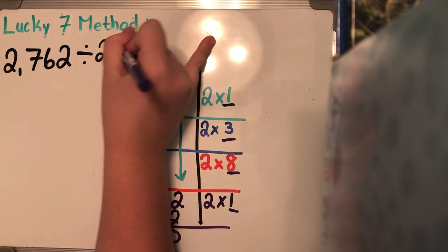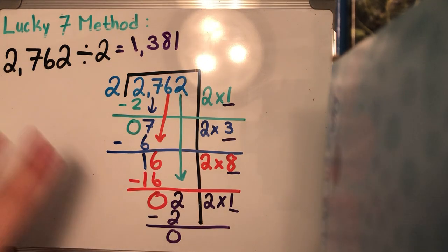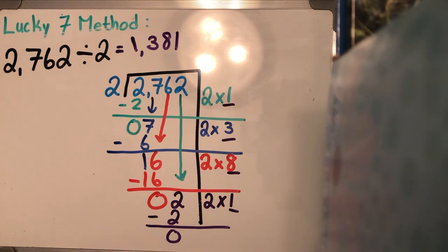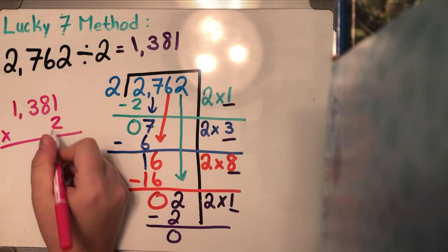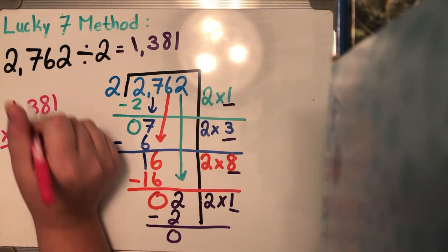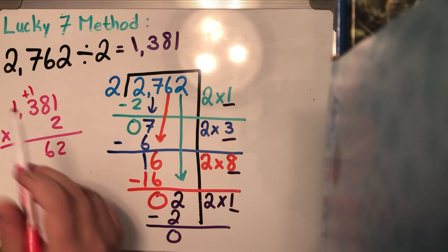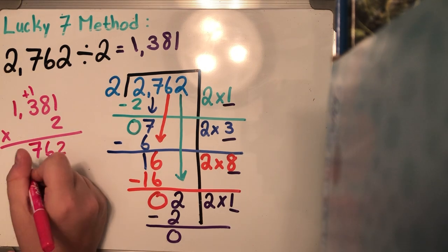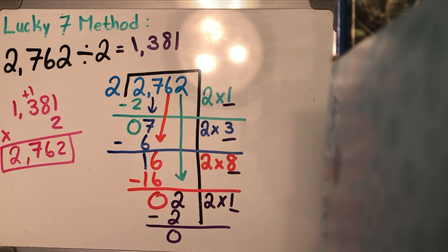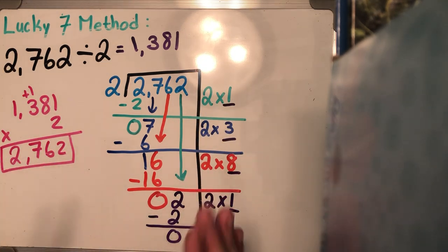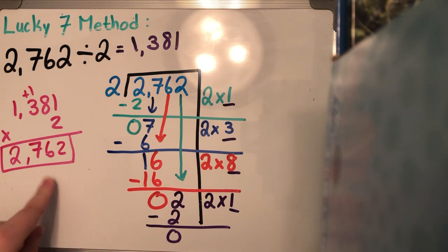So 2,762 divided by two gives a quotient of 1,381. Let's check: take 1,381 and multiply by two. Two times one is two, two times 80 is 160 — drop the six, carry the one. Two times 300 is 600 plus one is 700. Two times 1,000 is 2,000. The product matches my dividend, so I know my quotient of 1,381 is correct. Just a quick recap: with our lucky seven method you're multiplying, subtracting, then bringing down — multiply, subtract, bring down — then check off to the side to make sure your product matches your dividend. Until the next video, bye guys!